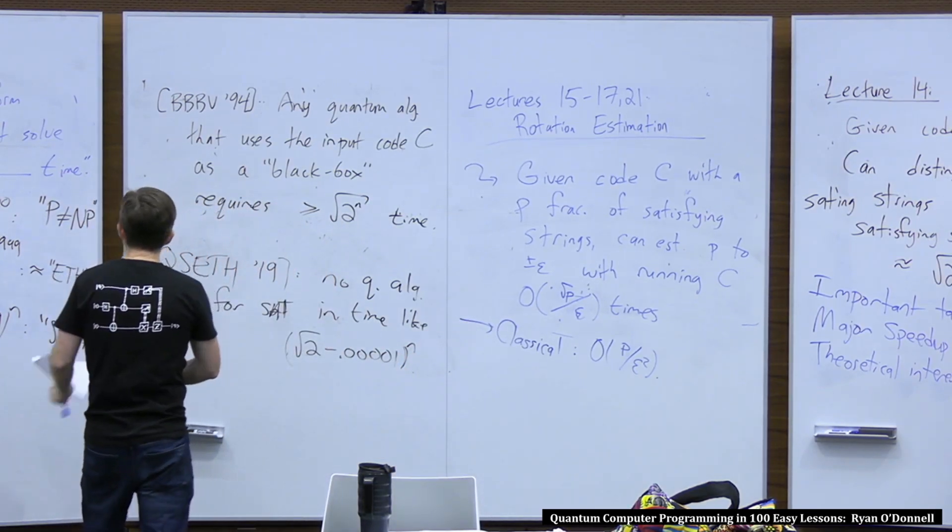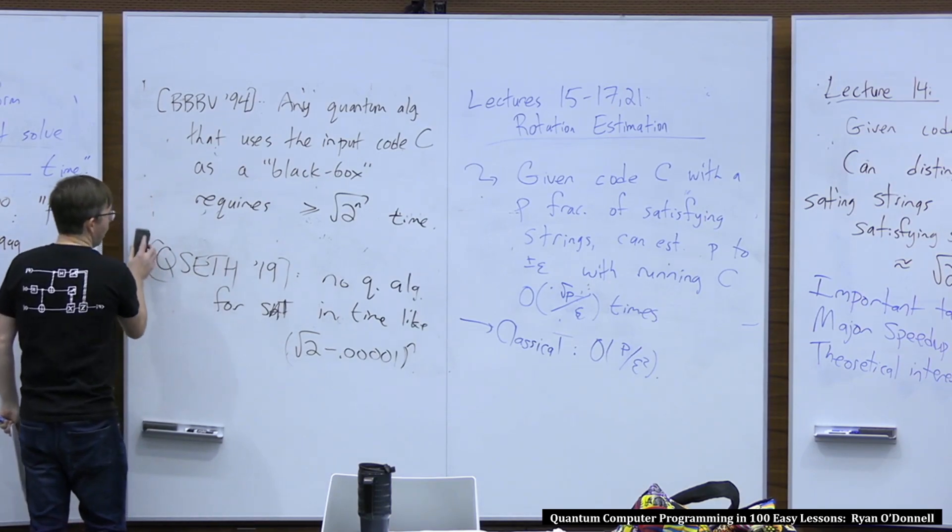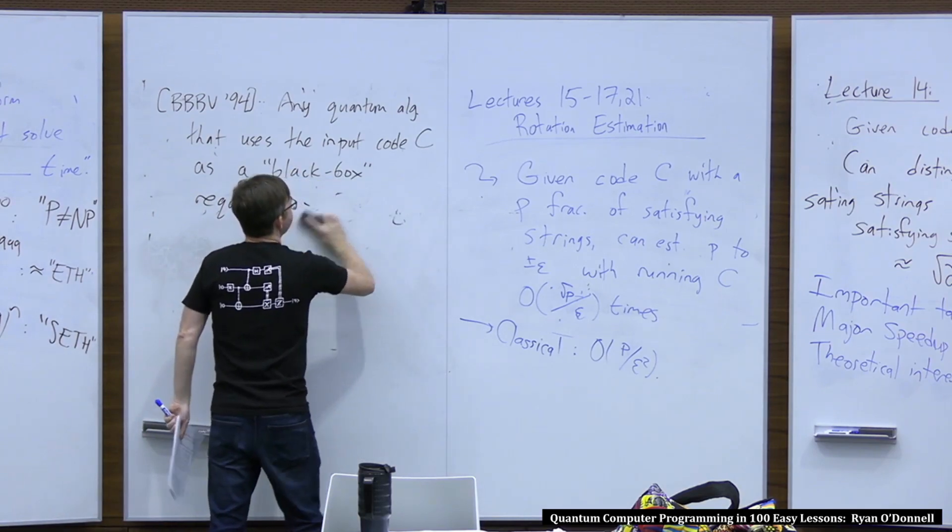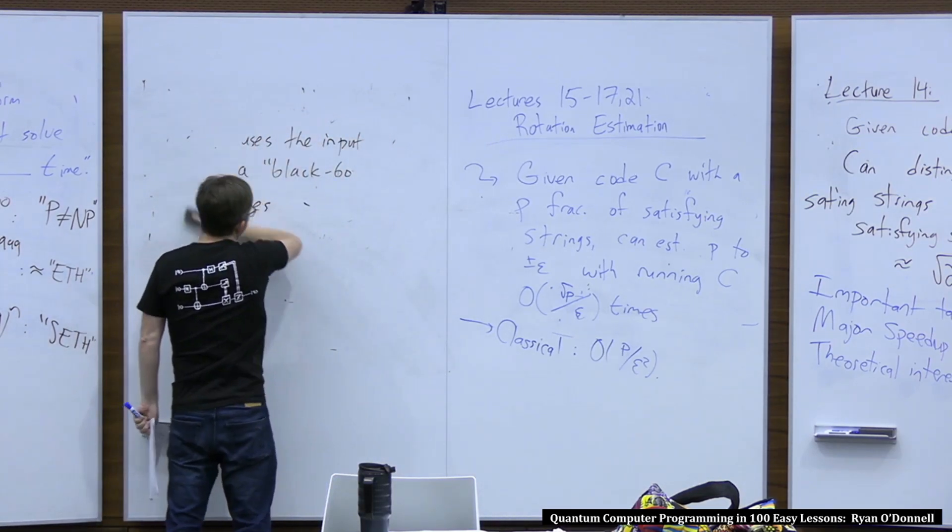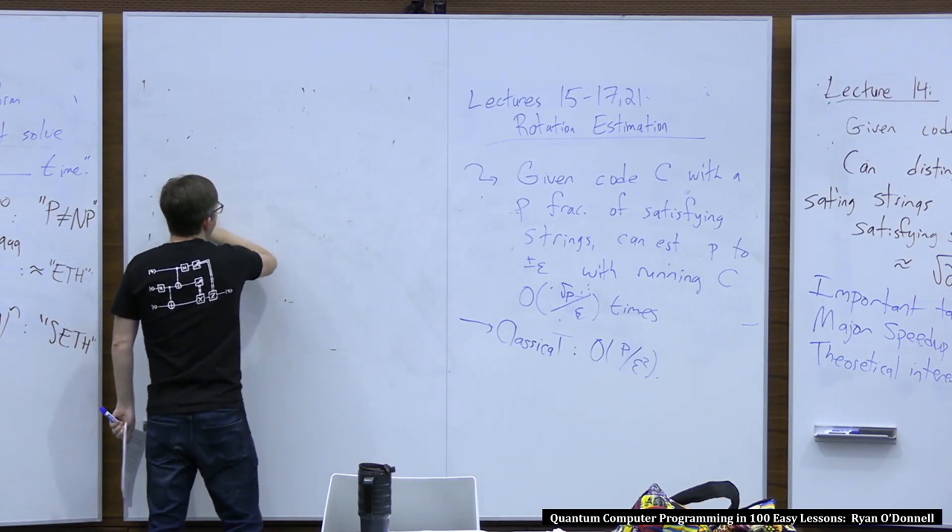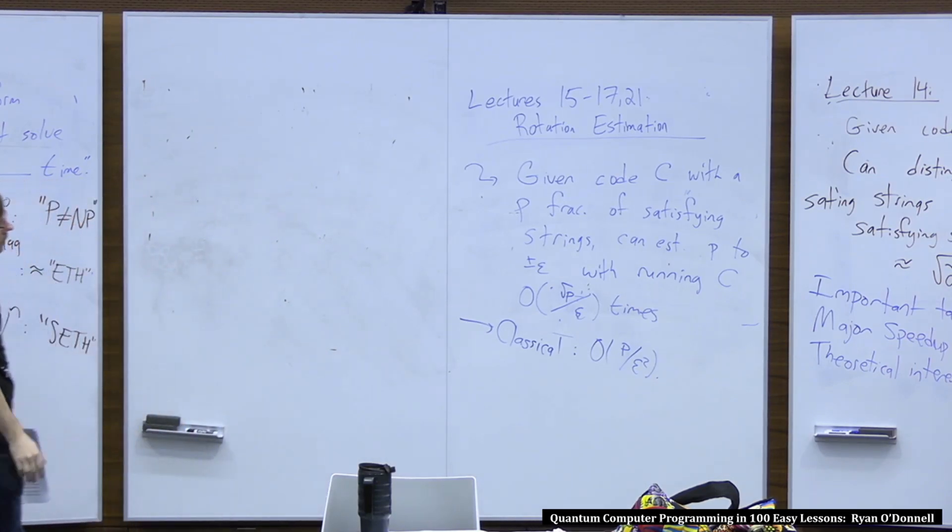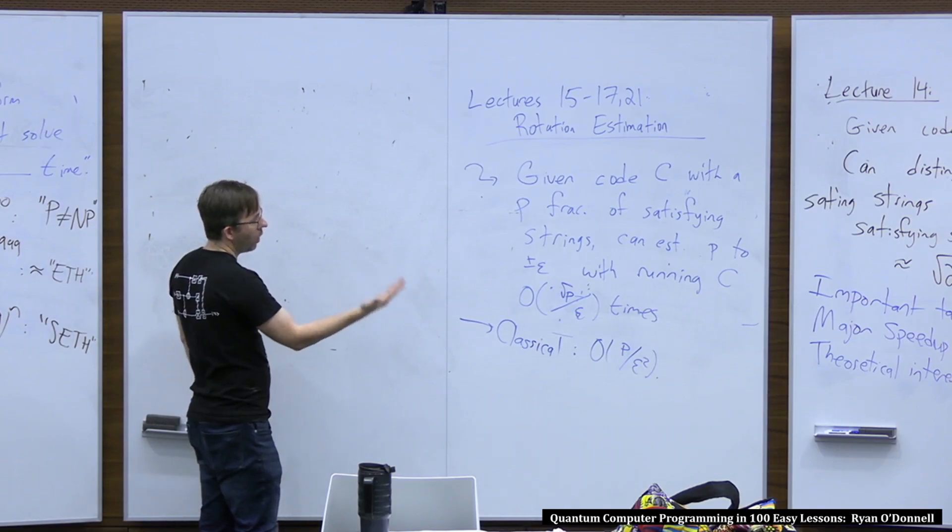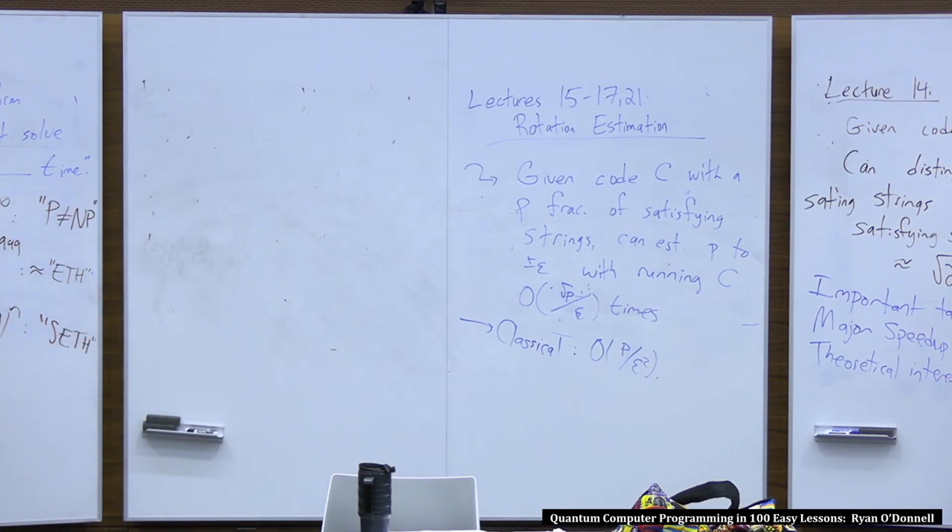So that was cool. And then, while we were doing this rotation estimation algorithm, we made this observation that rotation estimation, part of the input is like a unitary quantum operation that does a rotation. And the rotation estimation algorithm did some things where I'll do that operation not just once, but maybe I'll do it 10 times, or I'll do it 100 times. And if you just get this operation and you need to do it 100 times, then that costs you 100 times.